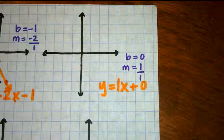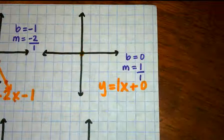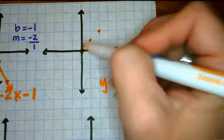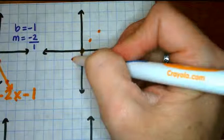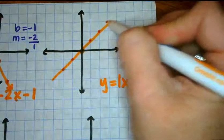To graph this one, we're going to start at 0, which is the origin. Then the slope tells us to go up 1, right 1, up 1, right 1. Or we could go down 1, left 1, down 1, left 1. And that will give you your line.